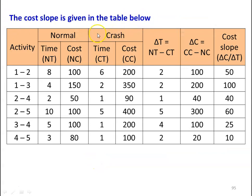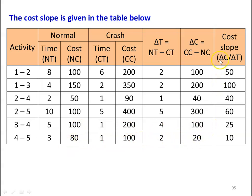Now we calculate the cost slope of each activity. ΔT values: activity 1-2: 8−6=2, activity 1-3: 4−2=2, activity 2-4 (shown as 2-1): 1, activity 2-5: 10−5=5, activity 3-4: 5−1=4, activity 4-5: 3−1=2. ΔC values: 200−100=100, 350−150=200, 90−50=40, 400−100=300, 200−100=100, 100−80=20. Cost slopes (ΔC/ΔT): 50, 100, 40, 60, 25, and 10 respectively.